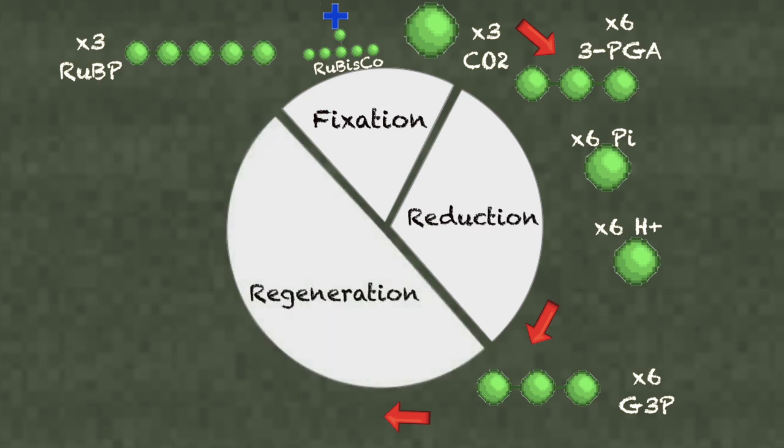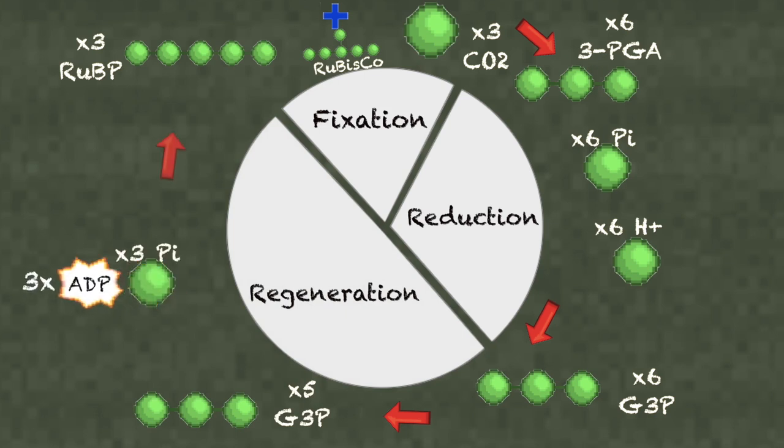In regeneration, the remaining five molecules of G3P use three molecules of ATP, which generates three molecules of RUBP, which is combined with CO2 as it repeats the process. And this is why it is called a cycle.